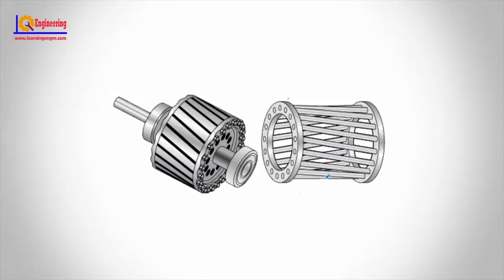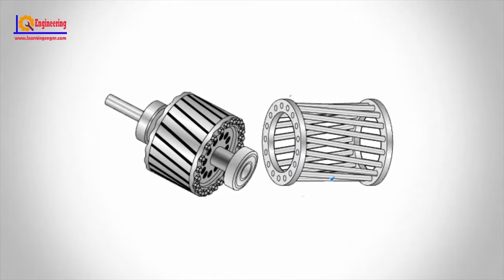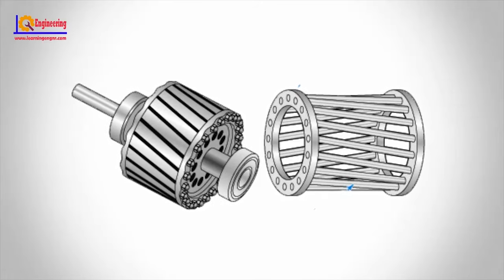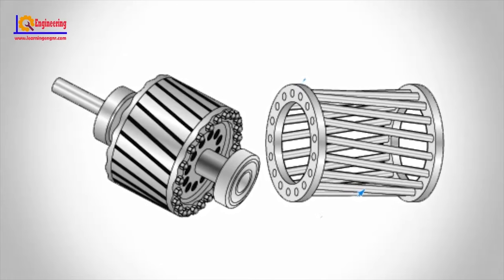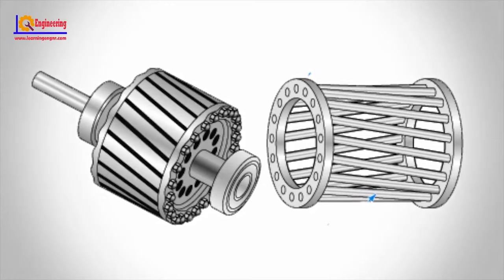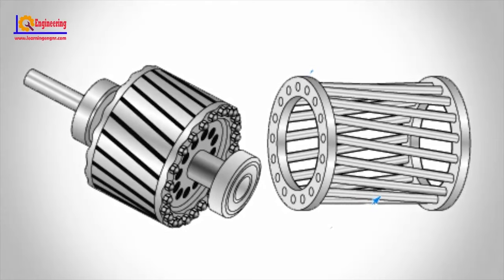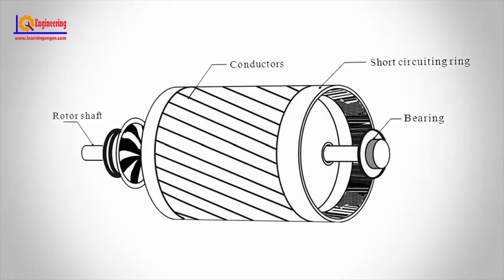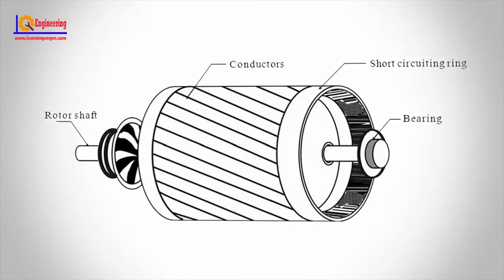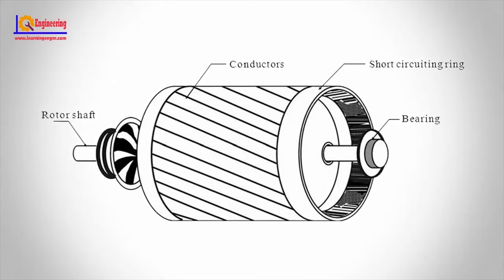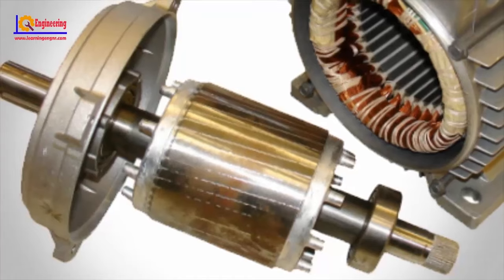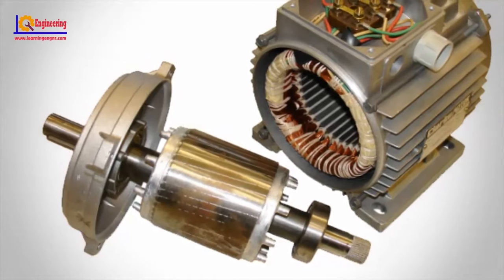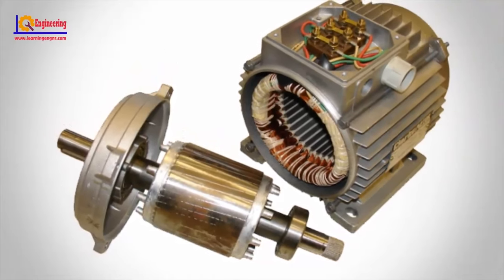The squirrel cage rotor consists of laminated steel in the core with evenly spaced bars of copper or aluminium, placed axially around the periphery, permanently shorted at the ends by the end rings. This simple and rugged construction makes it the favorite for most applications. The bars are slanted or skewed to reduce magnetic hum and slot harmonics and to reduce the tendency of locking. Housed in the stator, the rotor and stator teeth can lock when they are in equal number and the magnets position themselves equally apart, opposing rotation in both directions.